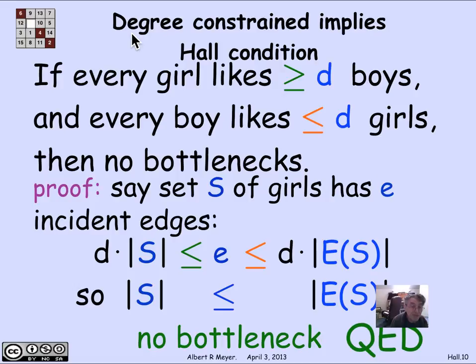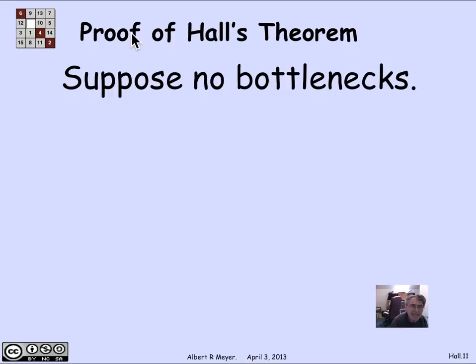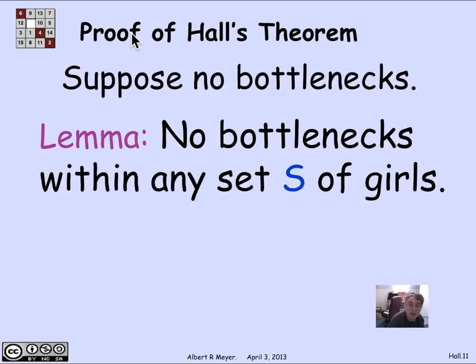There are many graphs with matches that are not degree-constrained — this is not an if-and-only-if theorem. It's just a sufficient condition that comes up often enough to be worth mentioning: degree-constrained implies Hall's condition is satisfied, which implies there's a perfect match. Let's turn now to proving Hall's theorem in the general case. The strategy is basically to break the problem of finding a match for a large set of vertices into problems of finding matches for smaller sets, and use strong induction.